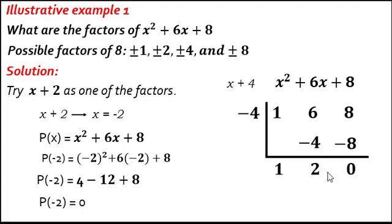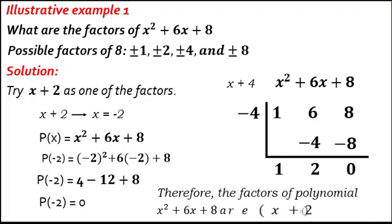The quotient is first degree: x plus 2. This is the factor we already found. Therefore, the factors of x squared plus 6x plus 8 are quantity x plus 2 times quantity x plus 4. The degree of the polynomial is 2, and the number of factors is also 2.